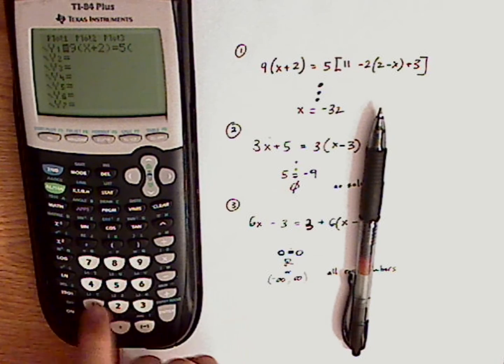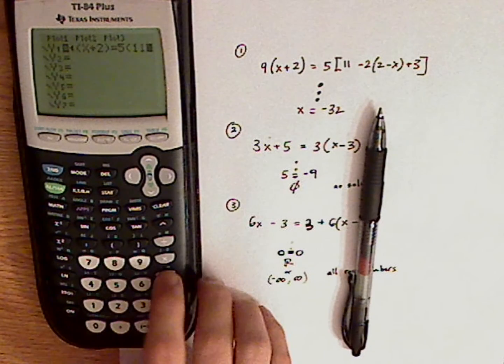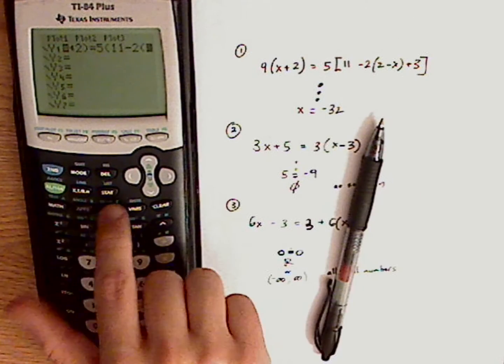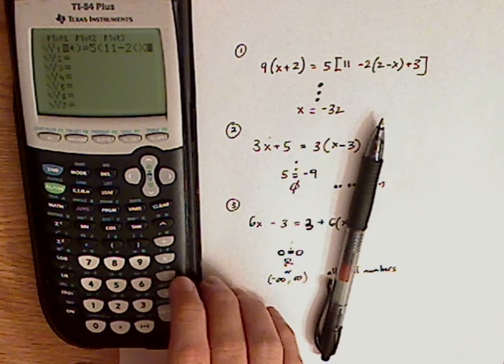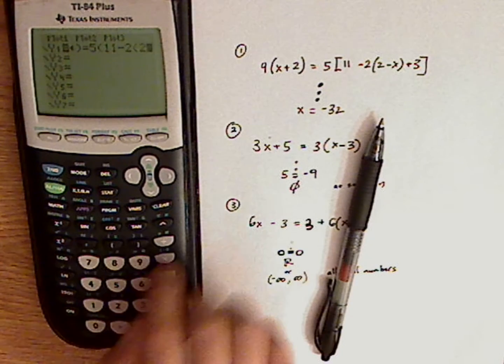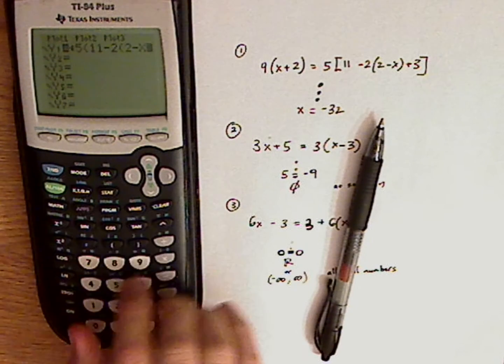Then type in this sign as normal. So 5 parentheses 11 minus 2, close, open the parentheses again, then x. Sorry it's supposed to be 2.